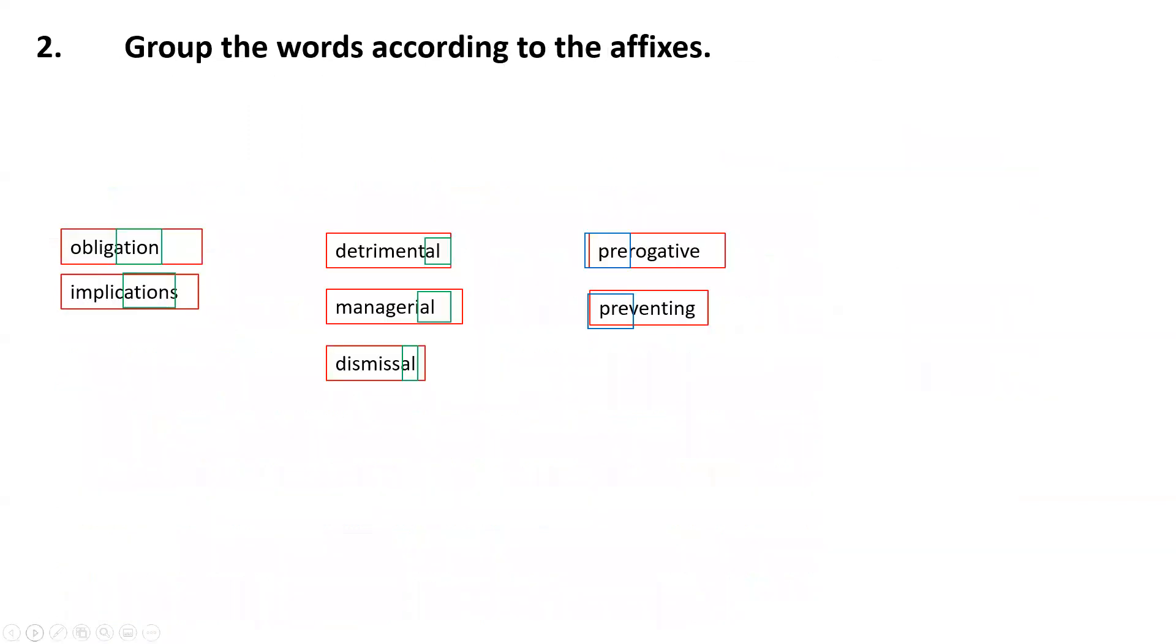Then on the second stage you need to group the words according to the affixes. So what you see here in green, these are suffixes—groups of letters that are after the root of the words. In the first case it's -ation for words obligation and implications. In the second group it's -al: detrimental, managerial, dismissal. And in the third group I have prefixes—the same prefix pre- for prerogative and preventing.